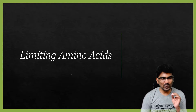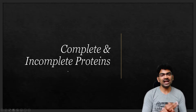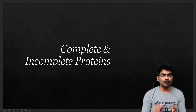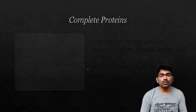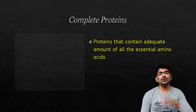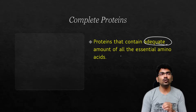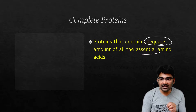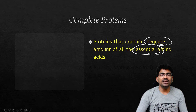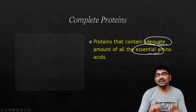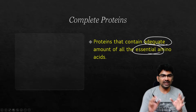To learn about limiting amino acids, we must first understand the terms complete and incomplete proteins. Complete proteins are those proteins that contain adequate amounts of all 10 essential amino acids. The human body cannot synthesize essential amino acids, so we must take them in the diet.